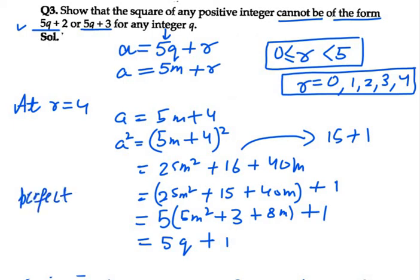But the forms 5q plus 2 and 5q plus 3 were never obtained. They cannot be written in the form of a perfect square. Therefore, we did not obtain these two results. That's all for question number 3.